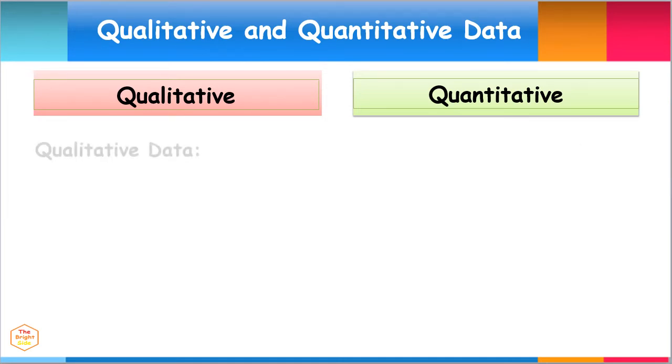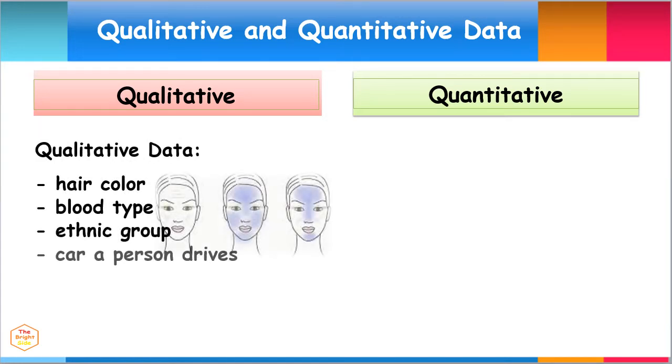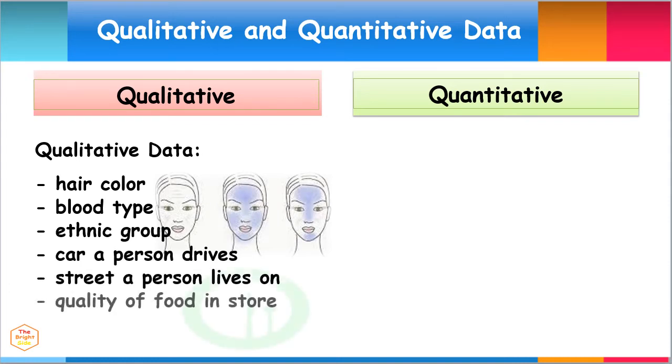Some examples of qualitative data can be hair color, blood type, ethnic group, car a person drives, street a person lives on, quality of food in a store, or notes taken during a focus group.